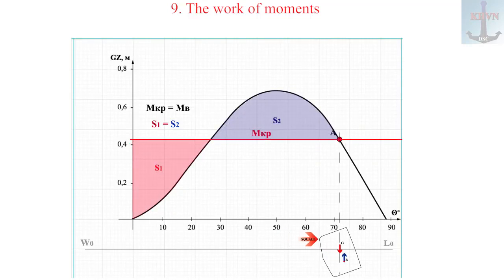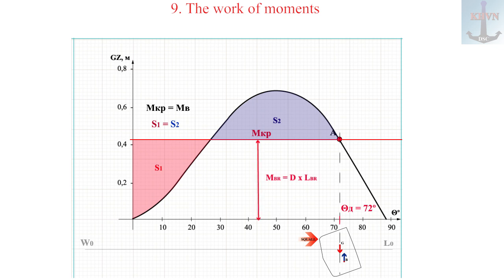Here the healing moment will reach the minimum capsizing value and the maximum dynamic list will be 72 degrees. Let's calculate the minimum overturning moment.